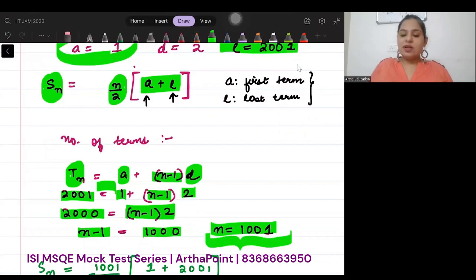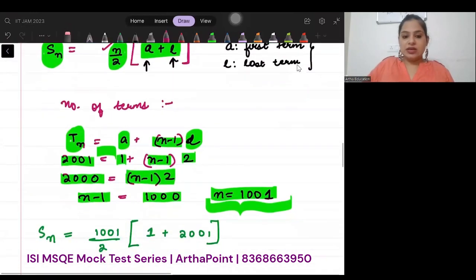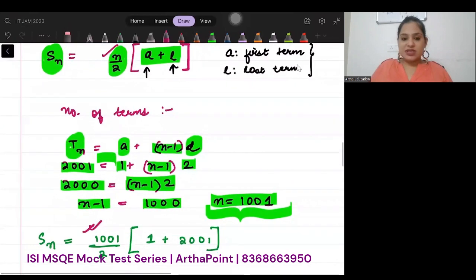So n will be 1001. So now you can just put this n here. So I will put 1001 divided by 2 into first term plus last term.